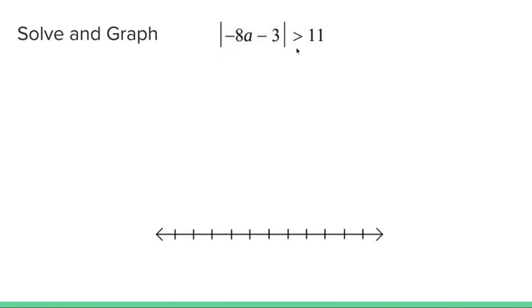What up, what up? We have ourselves an absolute value inequality. And in order to solve and graph an absolute value inequality, step number one is to make sure the absolute value is all by itself on the left. Happy news, it is.